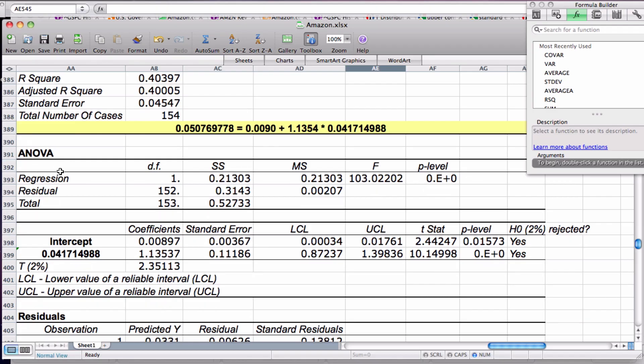Down here, we have our analysis of variance statistics, or ANOVA. We've got our regression statistics, our residual statistics, and then just the total. The residuals I'll get to a bit later.